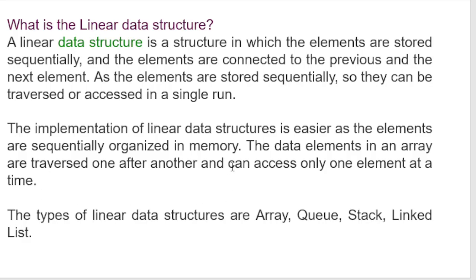What is a linear data structure? A linear data structure is a structure in which the elements are stored sequentially — it has a sequence of data. The elements are connected to the previous and the next element, meaning there is a connection between the previous element and the next element. As elements are stored sequentially, they can be traversed or accessed in a single run.